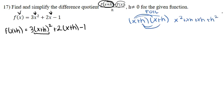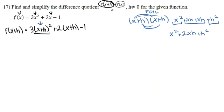Combining like terms from the FOIL: there's one x squared, two xh terms giving 2xh, and one h squared. So (x plus h) squared equals x squared plus 2xh plus h squared. Now we can plug this back into the first term of f of x plus h.